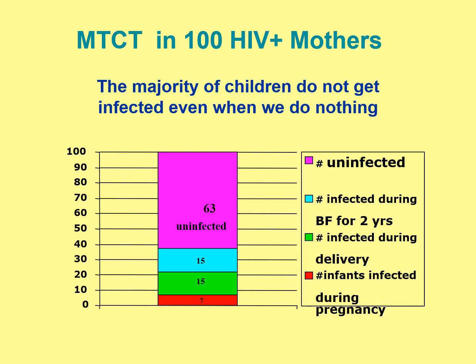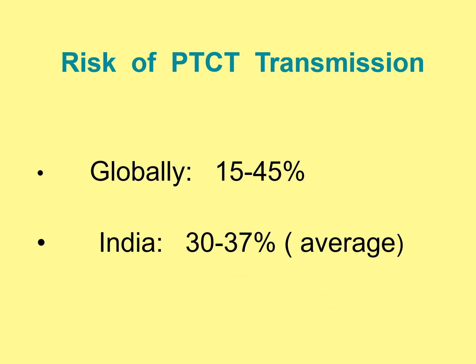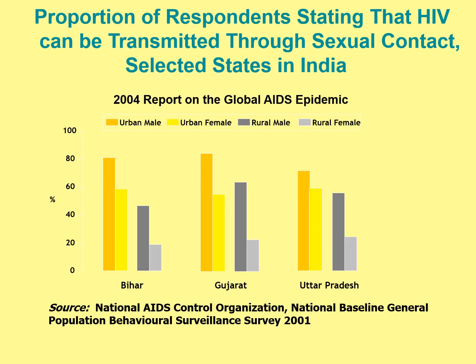For maternal-to-child transmission, in HIV-positive mothers, the majority of children do not get infected even when we do nothing. The risk globally is 15 to 45%; in India, the average is 30 to 37%. This graph shows the proportion of respondents who state that HIV can be transmitted through sexual contact in selected states in India, demonstrating that urban males are generally more knowledgeable regarding HIV.